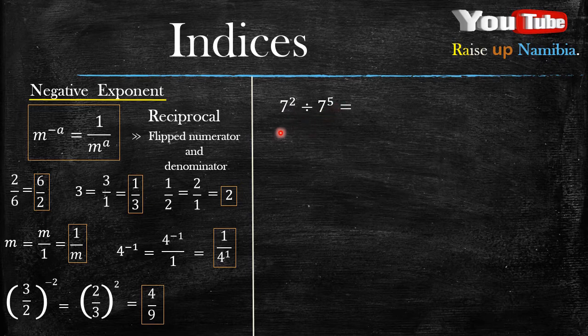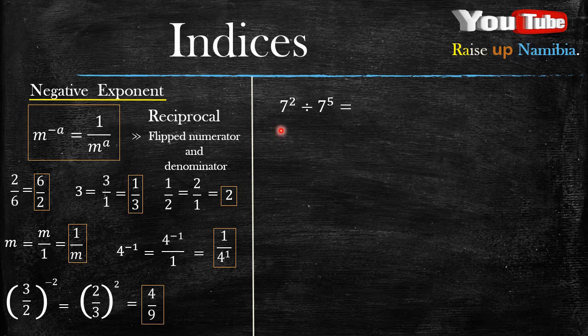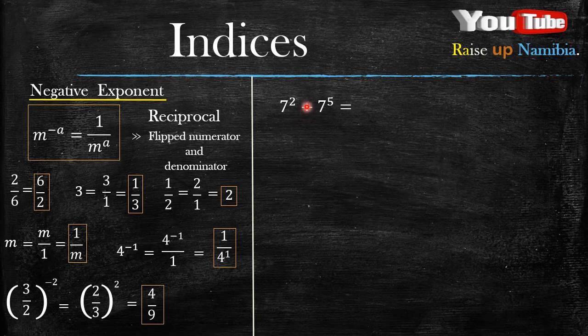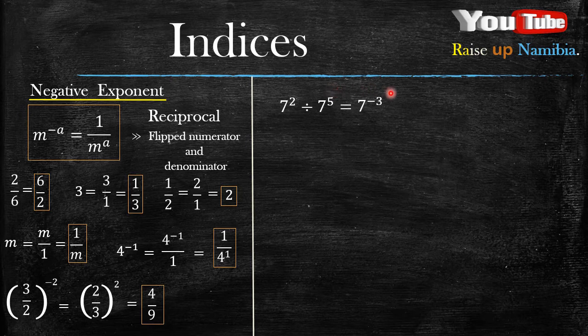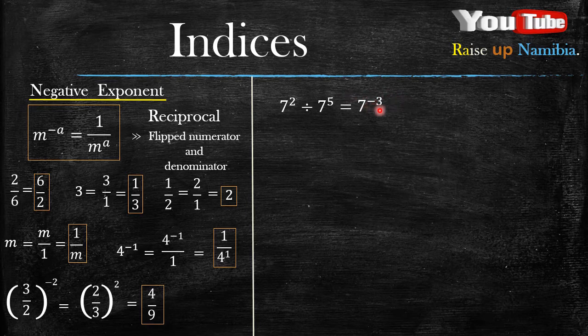you minus their exponents. Now, if you don't understand what I'm talking about, go check out the part 1, which I will be putting down in the link below. So, now when you minus or subtract the exponents, it will be 2 minus 5, which will give you a negative number, and that number is negative 3.